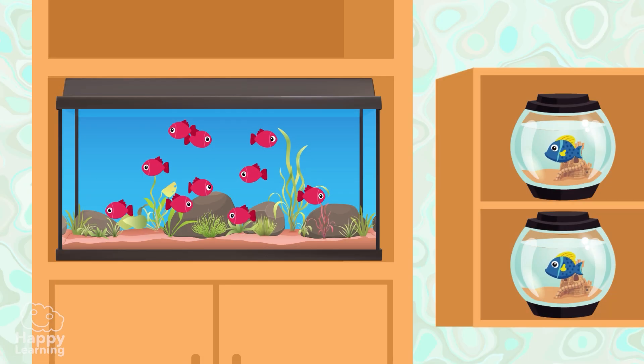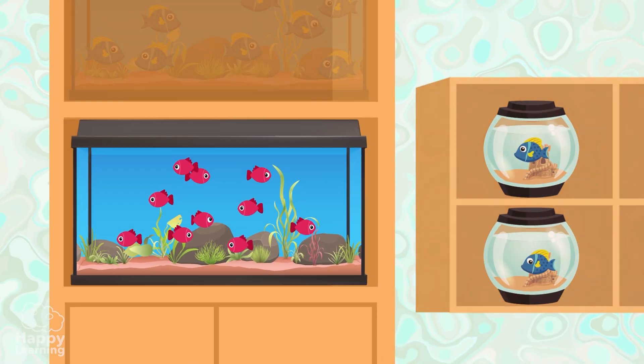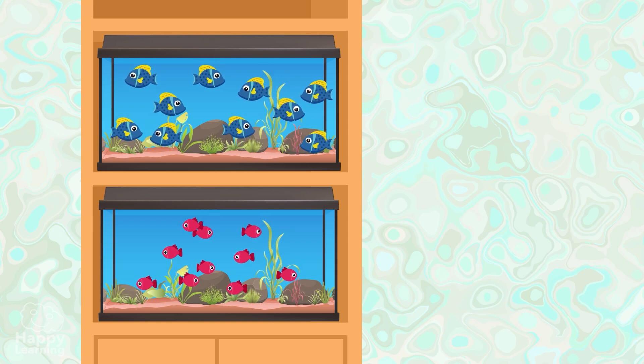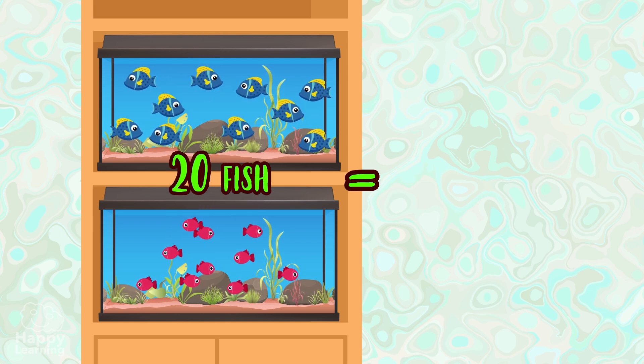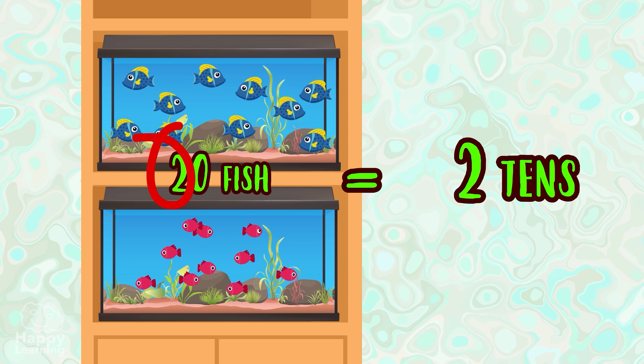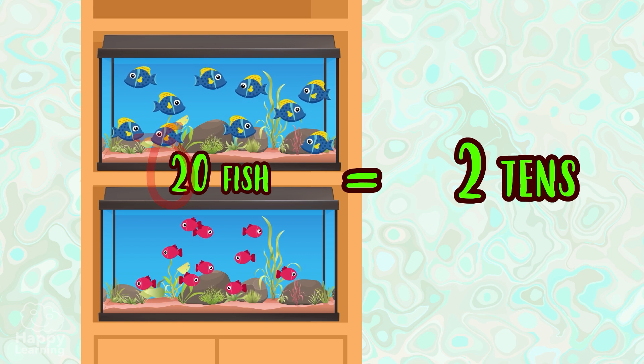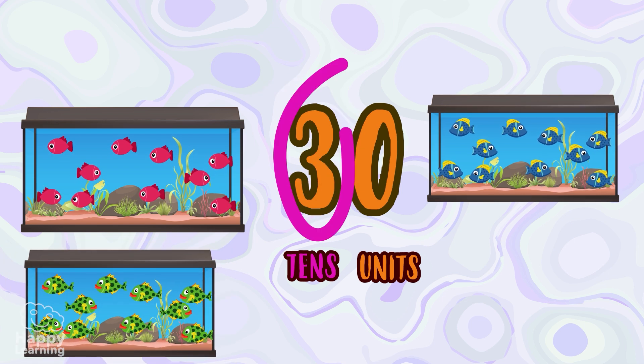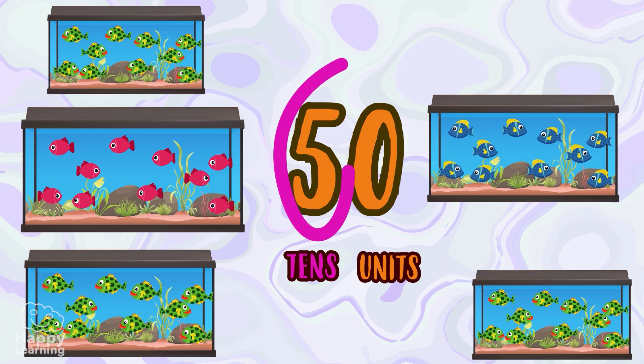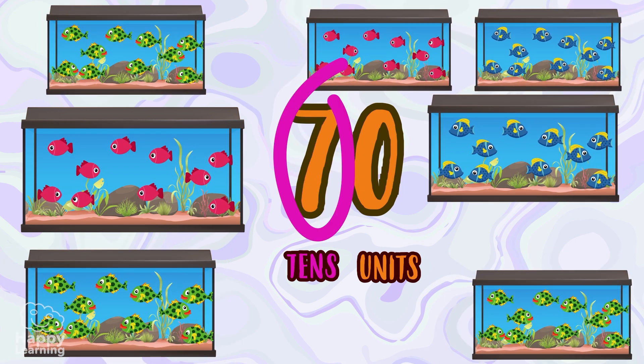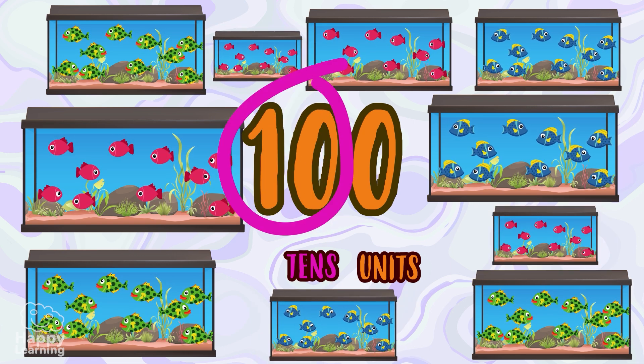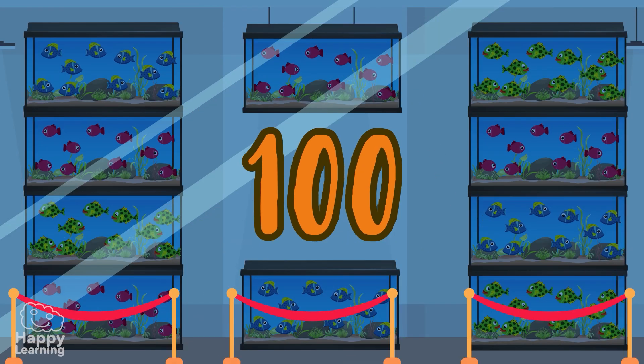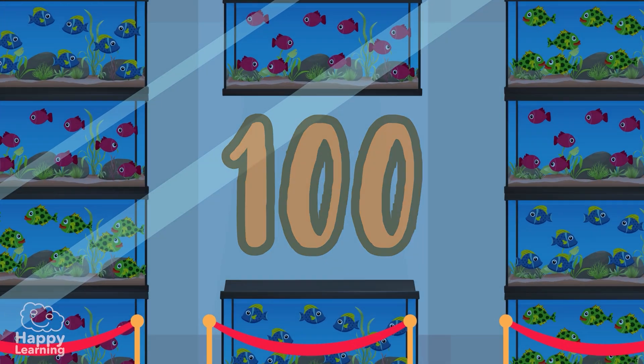Now imagine that the number of fish is increasing and now you fill two fish tanks, and each tank has 10 fish. We would have two lots of 10. The tens start from 10 and go up in tens: 10, 20, 30, 40, and so on up to the number 90. One more 10 and we would have 100. 100 units, 100 fish. Oh, how wonderful!